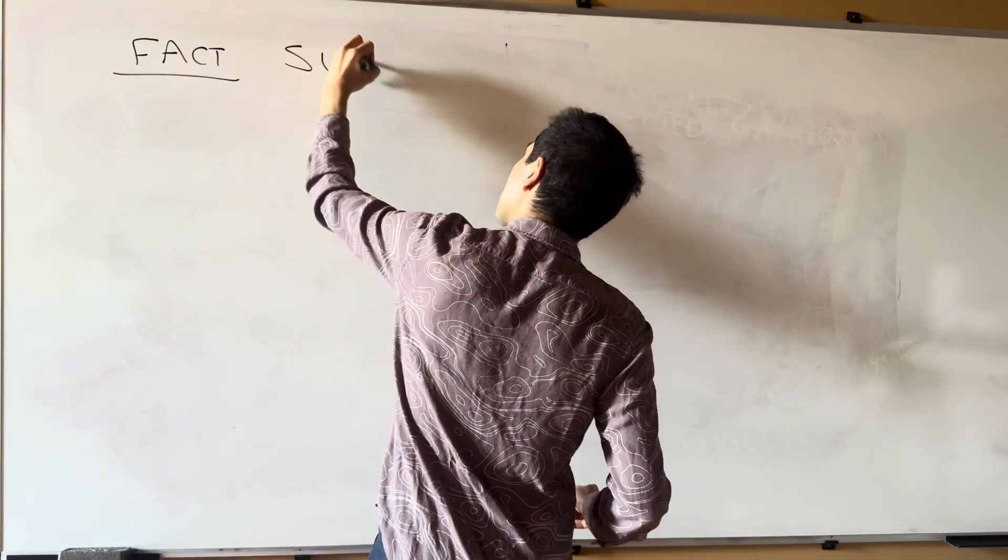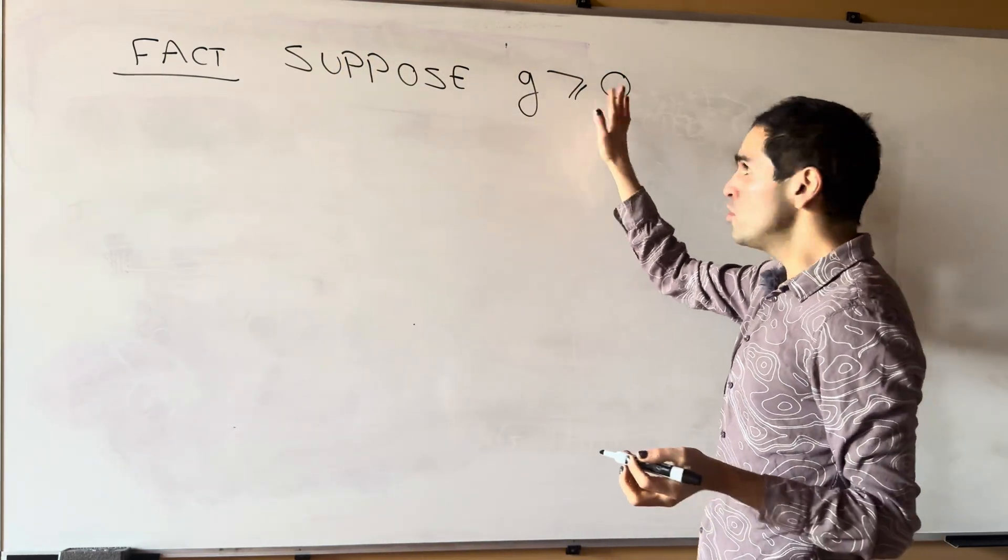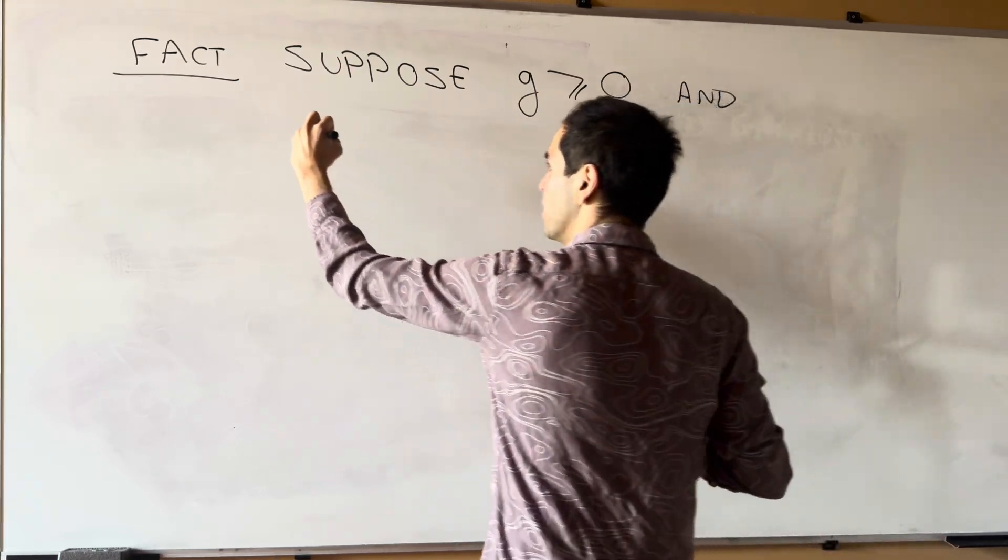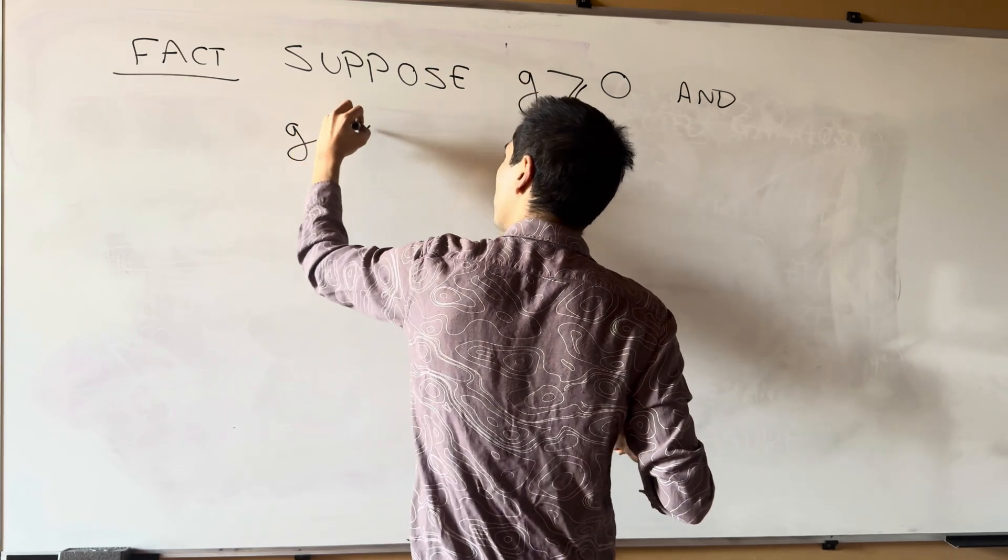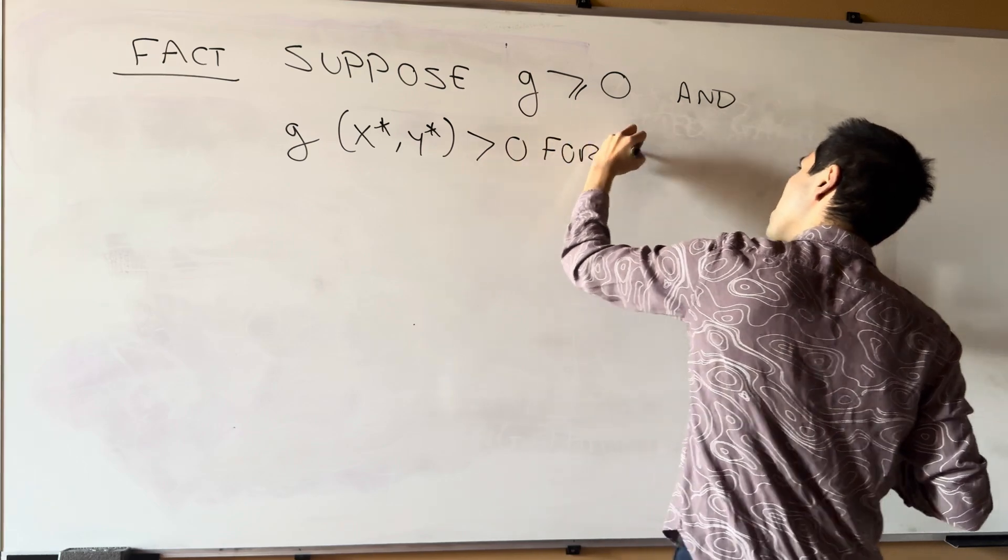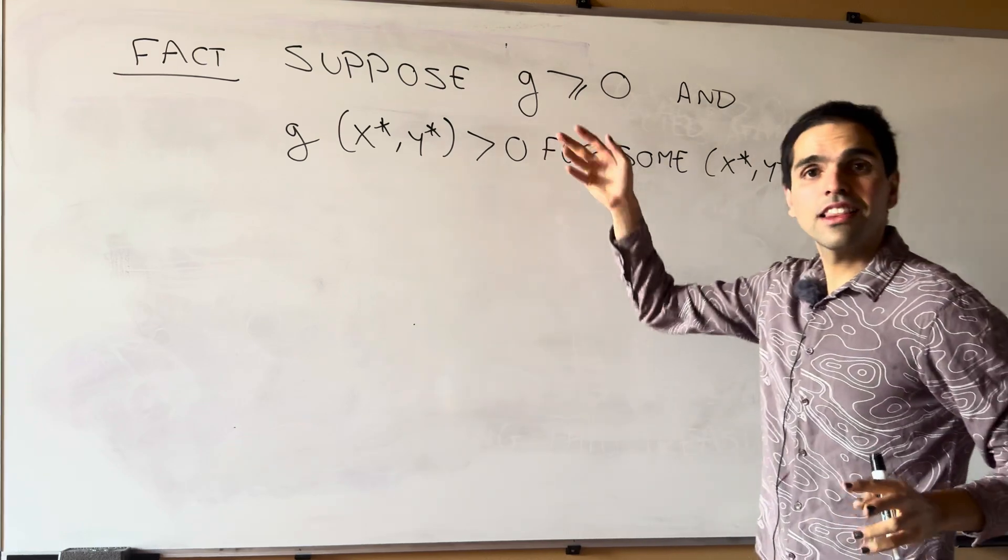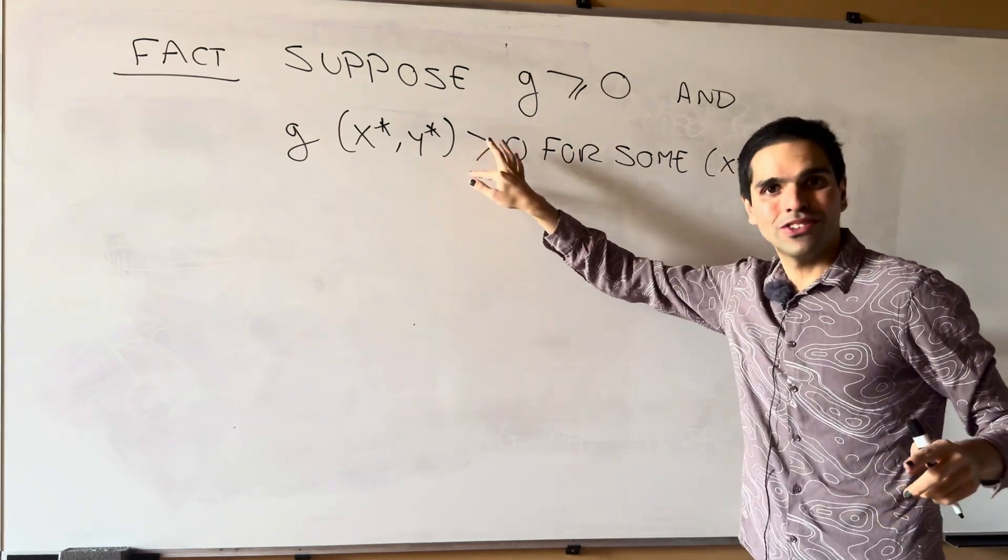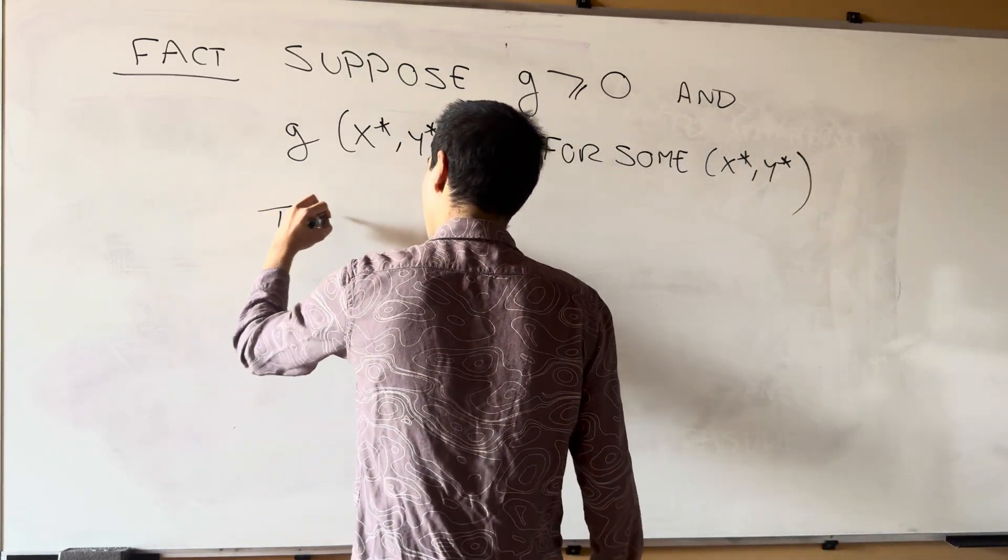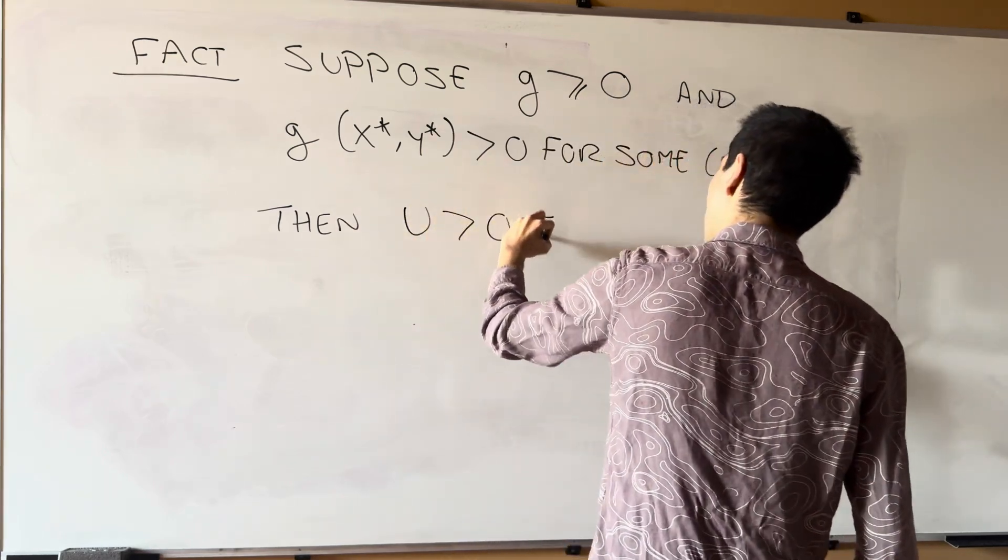So here's a cool fact. Suppose, first of all, our payoff is never a loss, so suppose g is always greater or equal to zero, and g is positive at the point x star y star. For some x star y star. One little thing, assume g is continuous, so it's really positive around that region. Then, it turns out, and this is, we'll prove this in another video, u is positive everywhere.